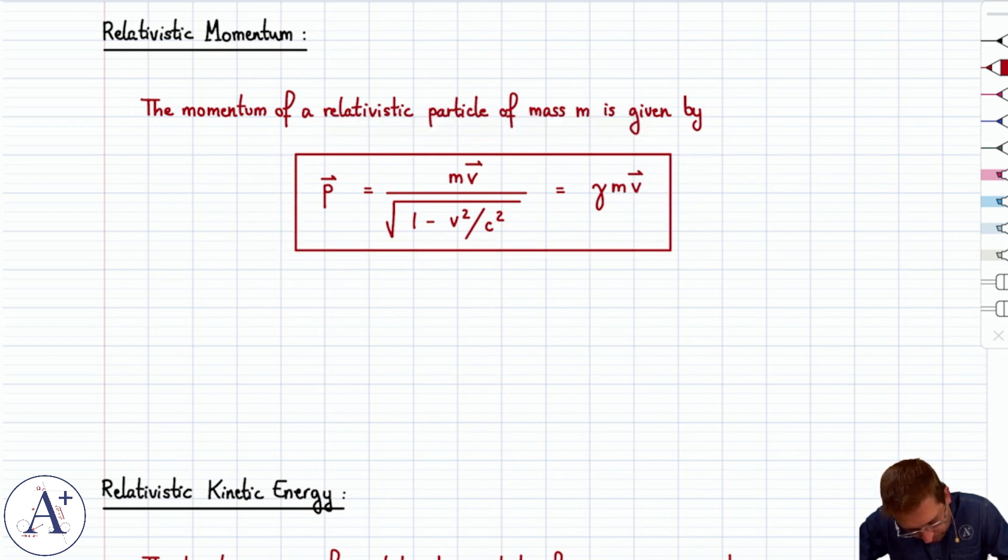And what's nice about this formula is that if v is very small in front of c and therefore relativity can be safely ignored, then gamma is approximately equal to 1 and then p is pretty much mv, which is the formula we were using in classical mechanics for momentum.